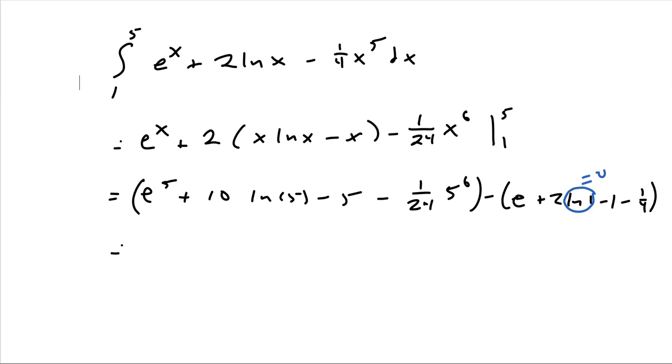So adding up stuff, we have an e^5 minus e plus 10 ln(5). And we'll take care of those things. And then we just have minus negative 5.